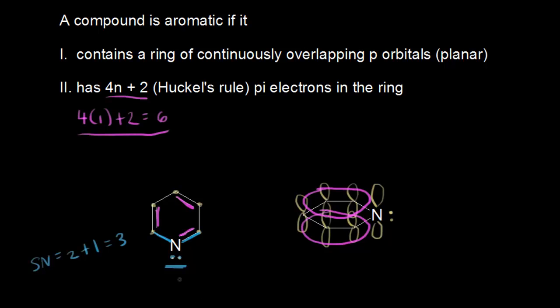Now, the lone pair of electrons on this nitrogen occupies an sp2 hybridized orbital. Since nitrogen is sp2 hybridized, it has three sp2 hybrid orbitals: one bonded to the carbon on the left, one to the carbon on the right, and the last one contains that lone pair. So the lone pair does not participate in resonance — it is localized to that nitrogen. Whenever you see a nitrogen in a situation like pyridine where some electrons are already participating in resonance, the remaining lone pair cannot participate; it stays localized.